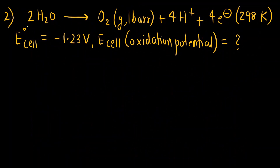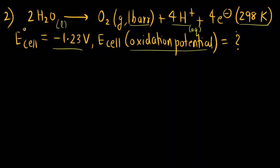Let us see the second question. The reaction given is: 2H₂O → O₂(g, 1 bar) + 4H⁺(aq) + 4e⁻ at 298 K. The standard cell EMF, E°cell, is given as −1.23 V. It is asked: what is the oxidation potential, meaning the actual E cell value? We are going to use the Nernst equation.